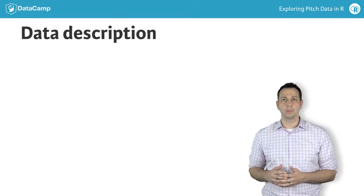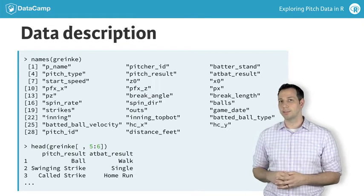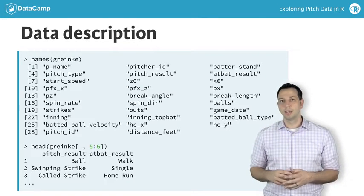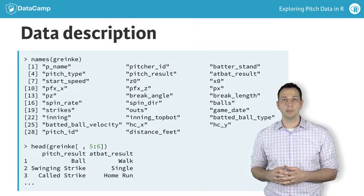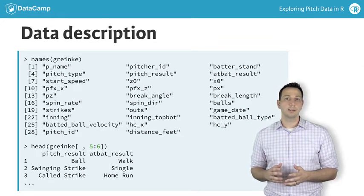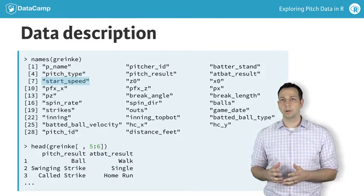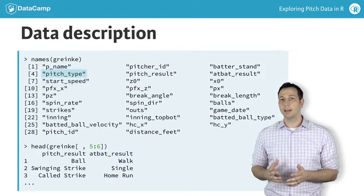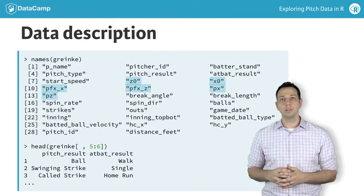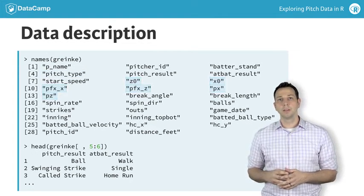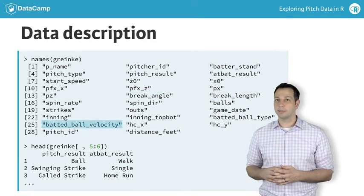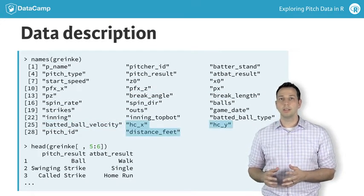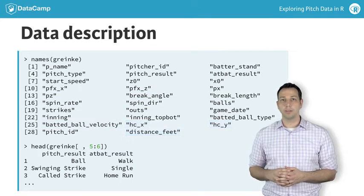The data used for this course are usually referred to as PitchFX or StatCast data. These data use high-tech cameras and a Doppler radar system to collect information on how fast pitches are thrown, the type of pitch thrown, the location of each pitch, the movement and spin rate of each pitch, and the velocity of batted balls and the direction and distance the ball is hit.